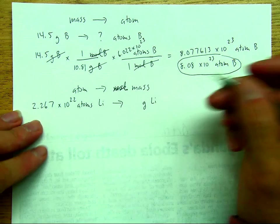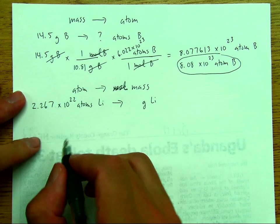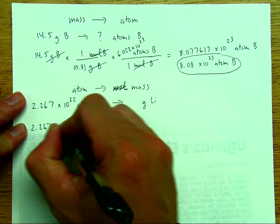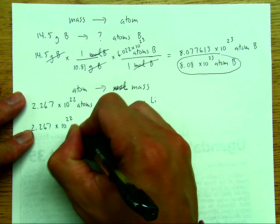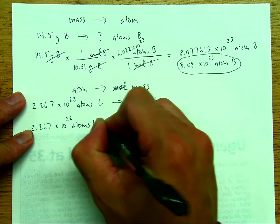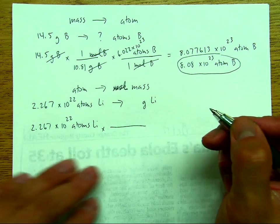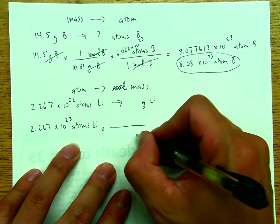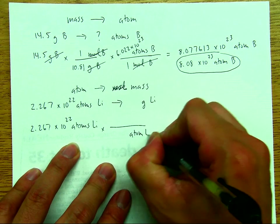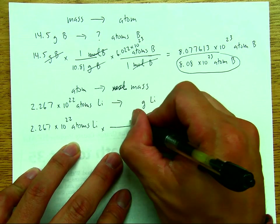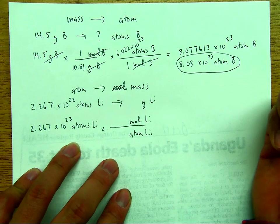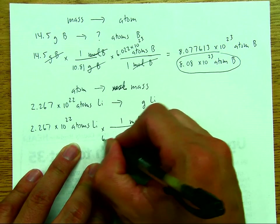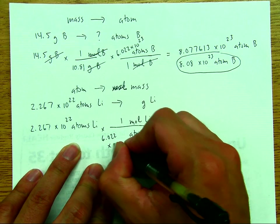We rewrite: 2.267 × 10²² atoms of lithium. The first step is to convert from atoms to mole, so we write atoms of lithium on the bottom and mole of lithium on top. The relationship between mole and atoms is that for every one mole of anything we have 6.022 × 10²³ atoms.